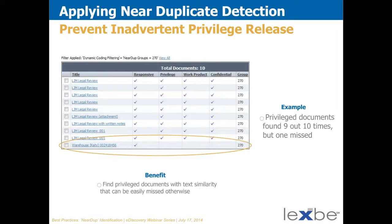This screenshot shows how this works in action — a browse view showing a number of versions of dupes from a dupe group. In this example, nine out of ten have been marked as privileged and responsive work product, but one was missed and was going to go out in the production. By having this near-dupe grouping, you can see where that is and then follow up on that one to get it properly marked and withheld as well.